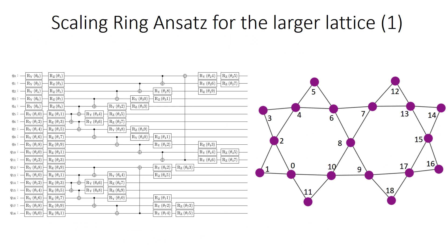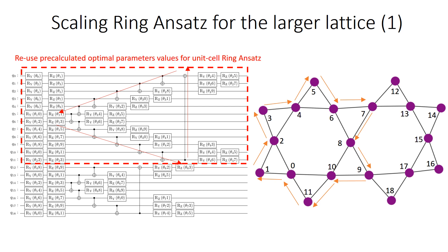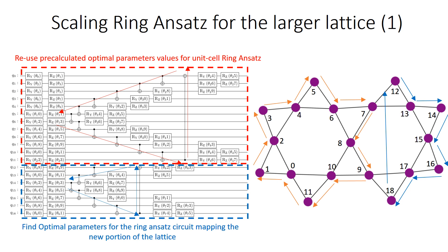Finally, I would like to show the scalability of ring ansatz for the calculation of ground state energy for the large lattice. So in this case, the diagram on the right shows two Kagome unit cell lattice. And what's interesting is that the circuit shown on the left can be split into two parts. The upper part maps to the left unit cell, which can be separately optimized with the pre-calculated optimal parameter values as discussed before. The other half of the circuit, the lower half, maps to the Kagome unit cell shown, part of the Kagome unit cell on the right, whose parameters can be separately learned and optimized.